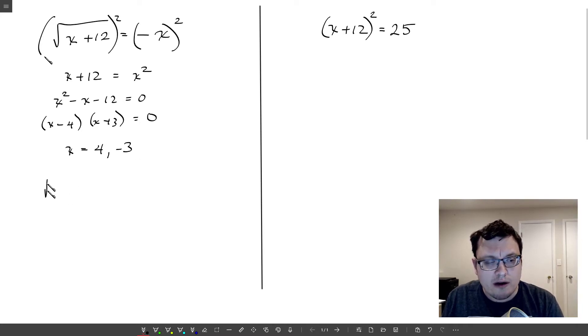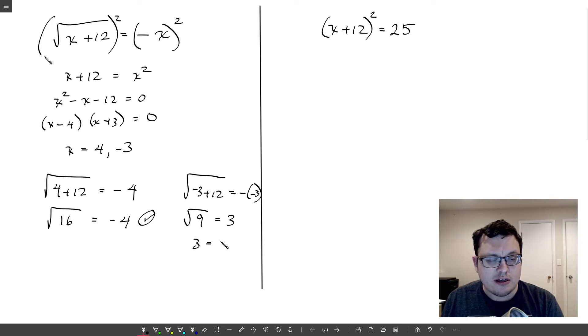Let's try four first. So the square root of four plus 12 equals negative four. This is the square root of 16 equals negative four. And doesn't that work? Hmm. Let's look at negative three. The square root of negative three plus 12 equals negative negative three. So this is the square root of nine equals three. Yeah, three equals three, that works.